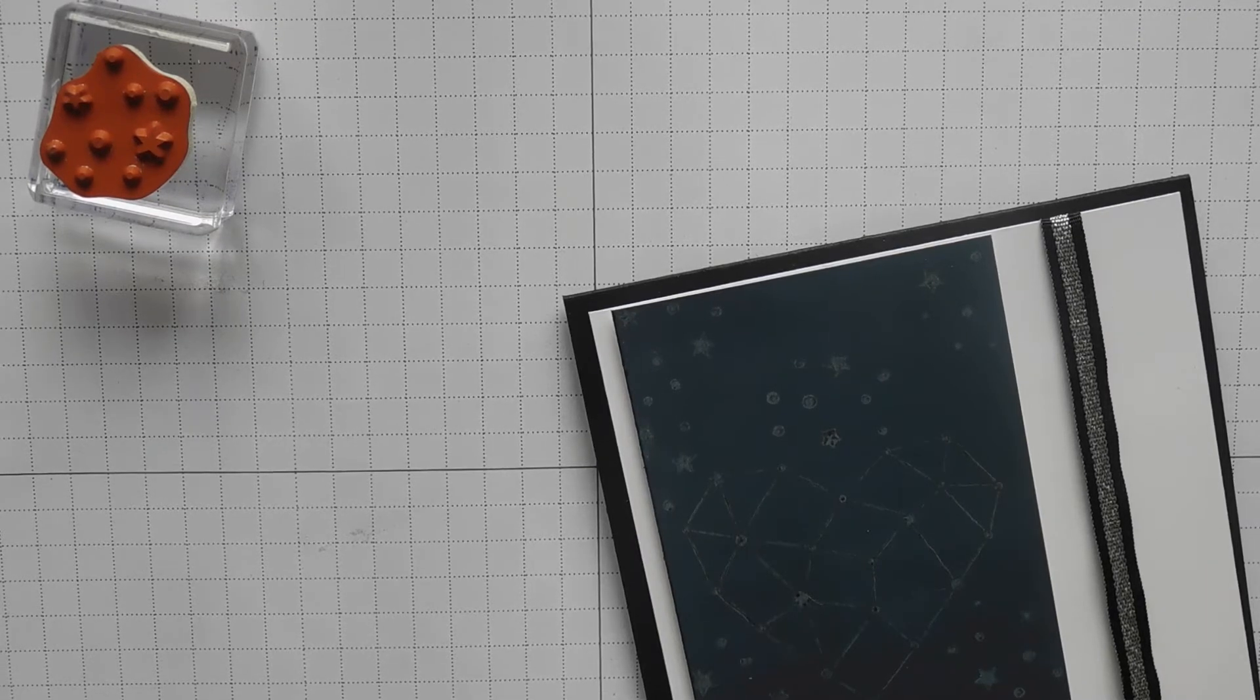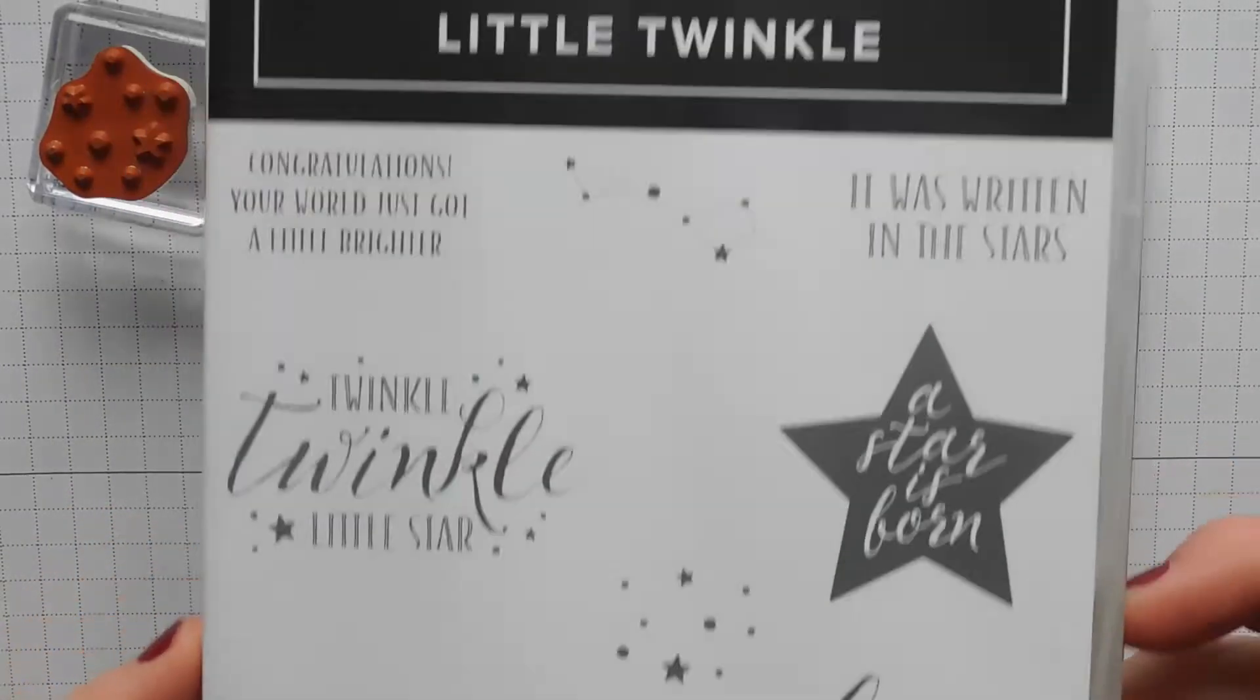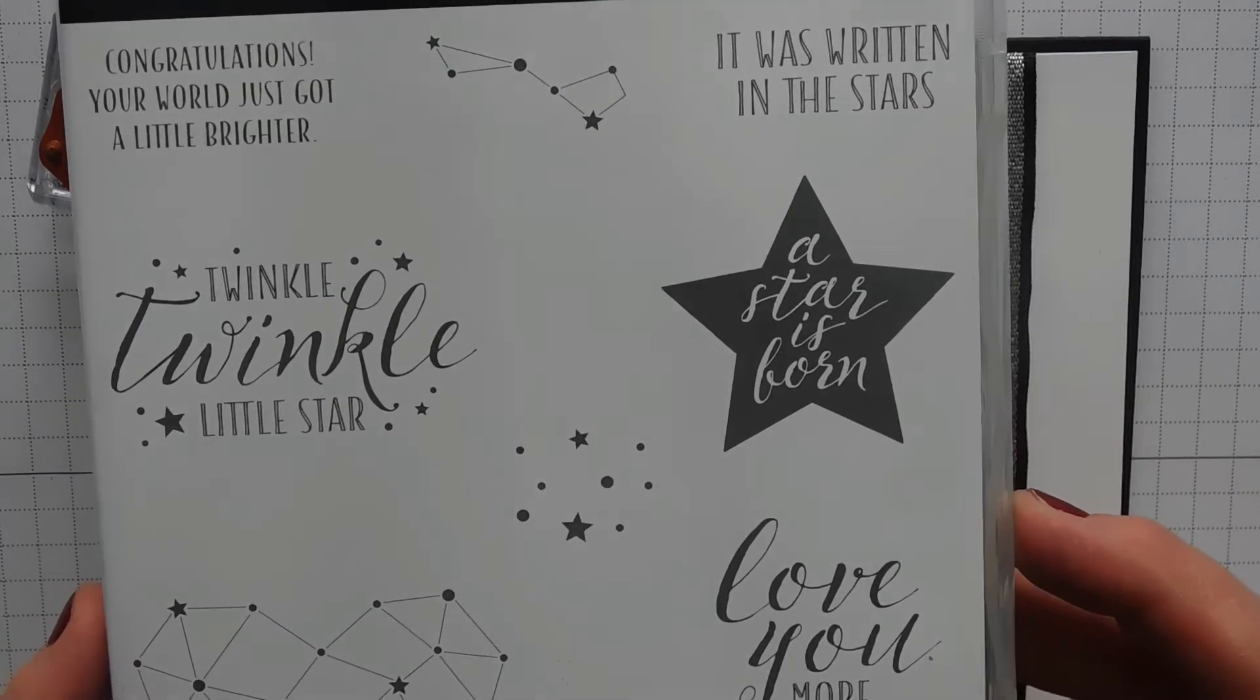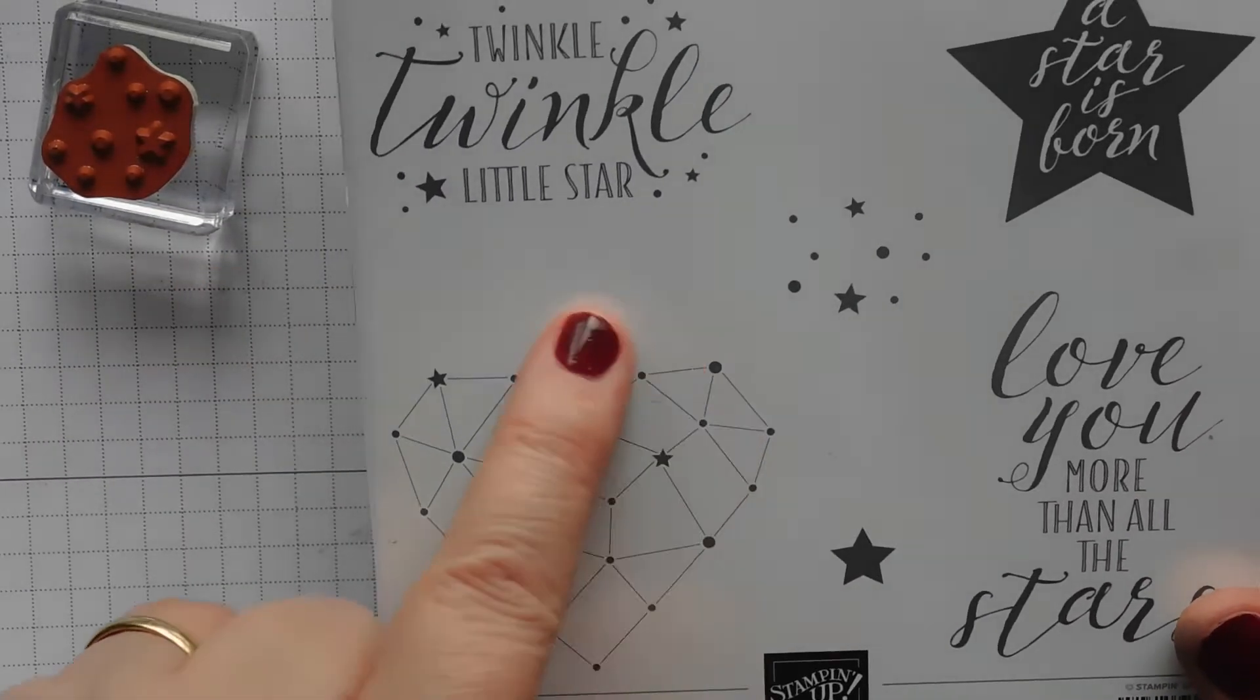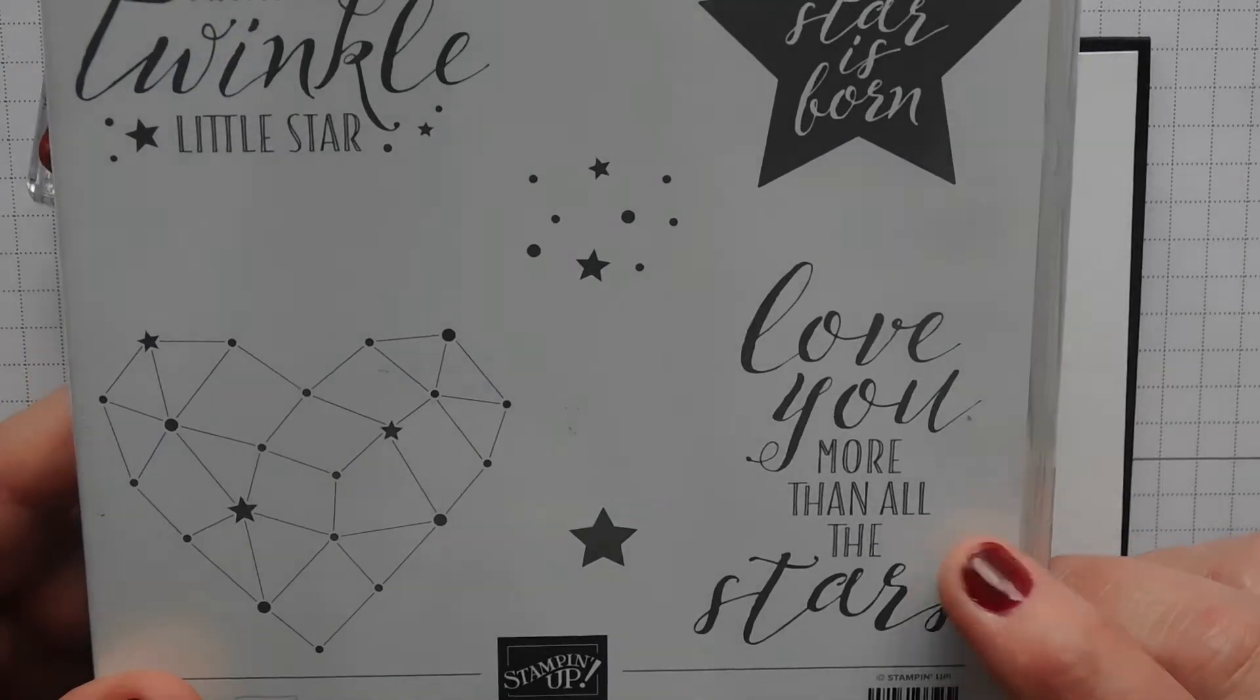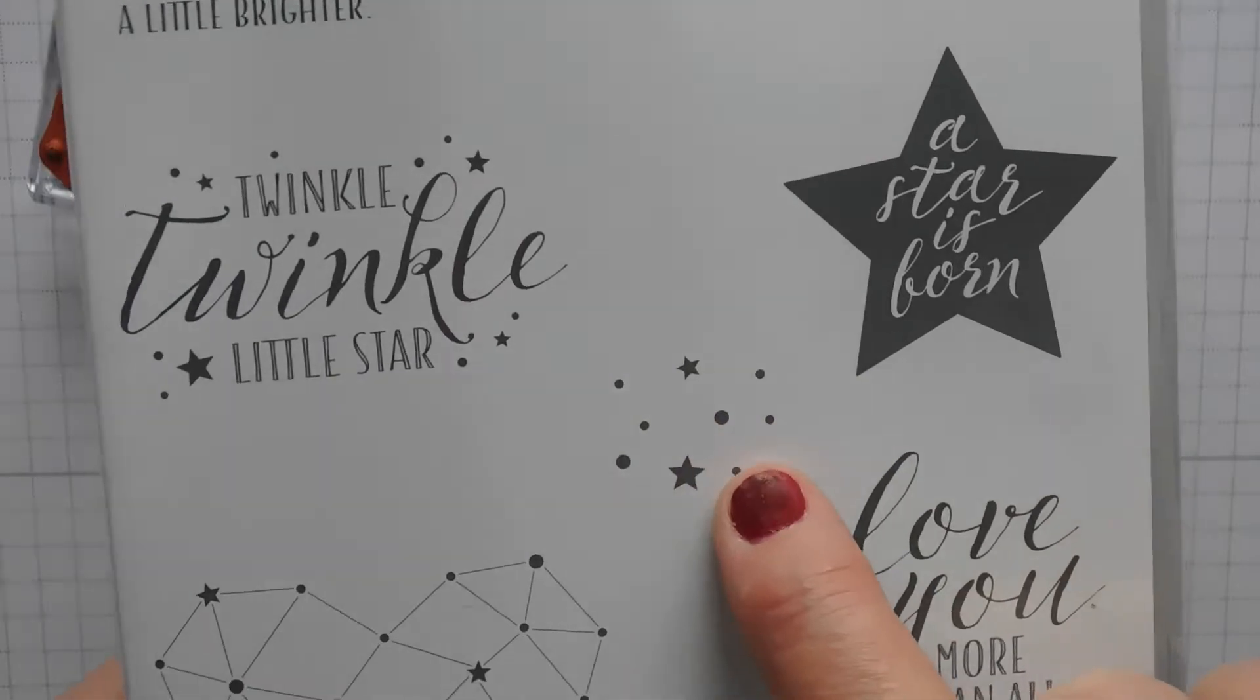Today I'm going to be making a card using the Little Twinkle stamp set. I'm using it as a Valentine card, black and white. So I'm going to be using Love You More Than The Stars. And also I'm going to be using this stamp here.